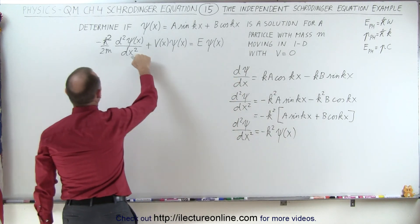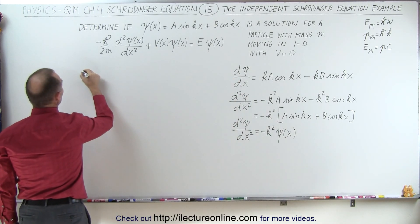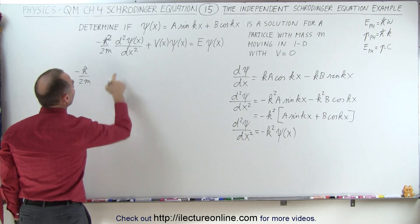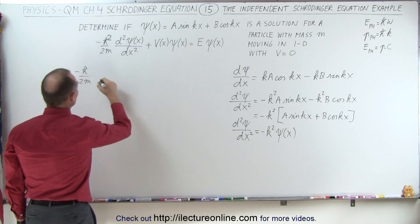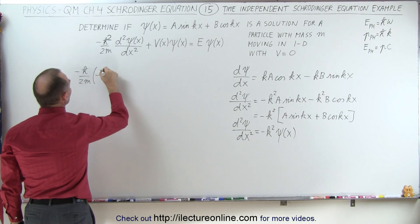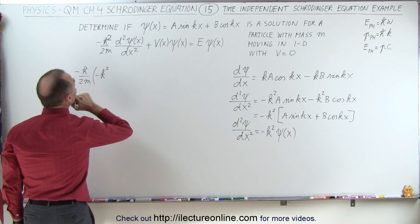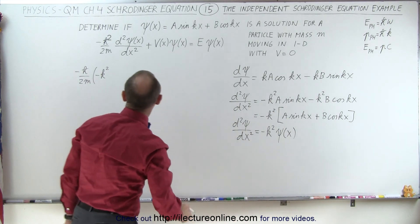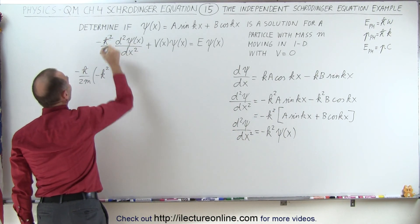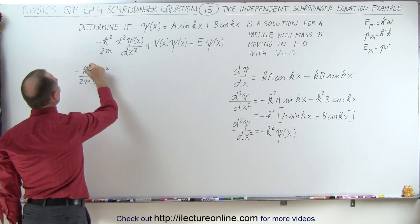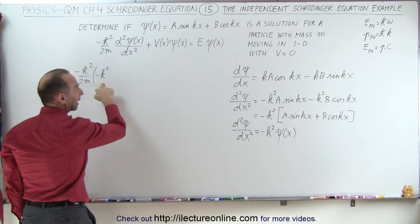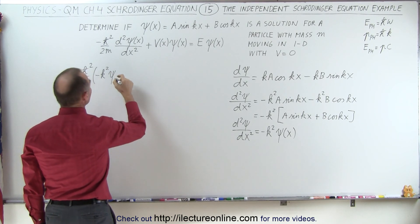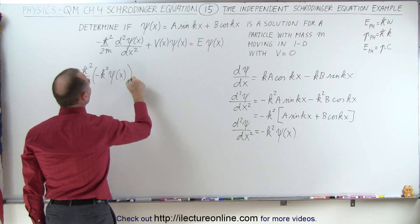Now substituting into the Schrödinger equation, the left side becomes minus h-bar squared divided by 2m — and I notice a mistake: that should be h-bar squared, not h-bar. So we have minus h-bar squared times minus k squared times the wave function.